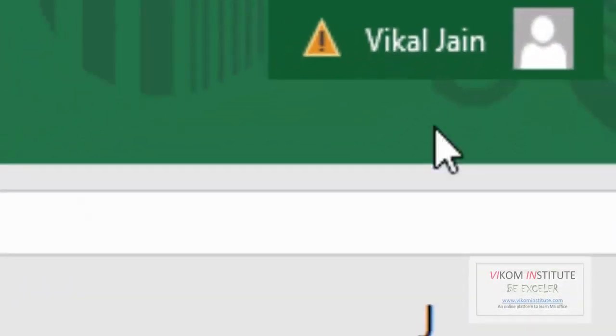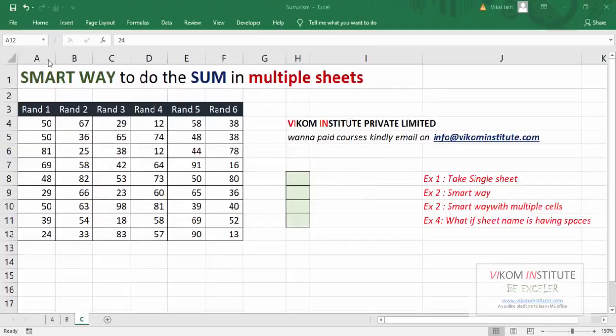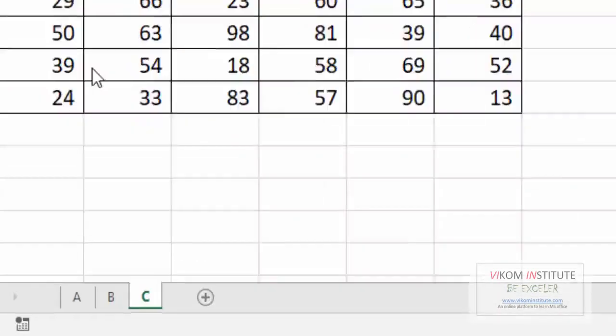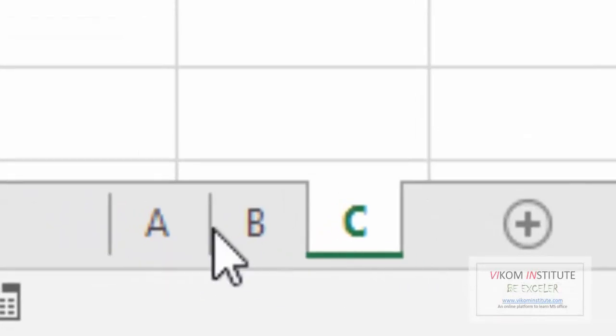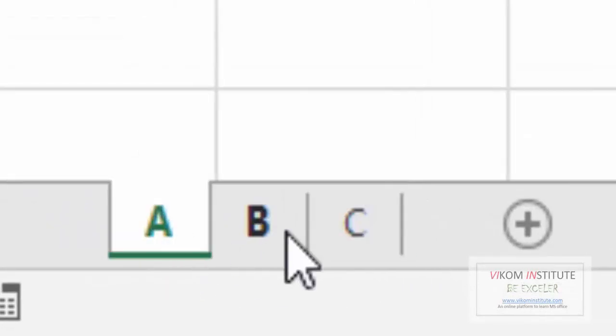Hello everyone, my name is Vikal Jain and today I am going to show you how to do SUM using a smart way in multiple sheets. I am having three sheets over here: sheet number A, sheet number B, and sheet C.